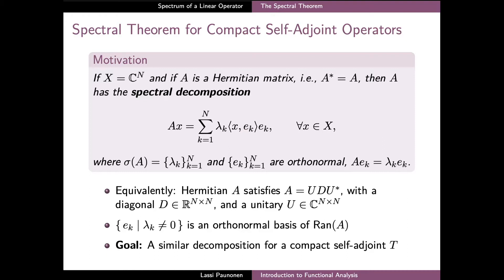In particular, since Ax can be expressed as a linear combination of e_k, the eigenvectors which correspond to non-zero eigenvalues λ_k form an orthonormal basis of the range of A. Our goal here is to show that all compact self-adjoint operators on Hilbert spaces have a similar spectral decomposition, but with possibly an infinite number of terms, depending on whether the operator T has a finite or infinite number of non-zero eigenvalues.